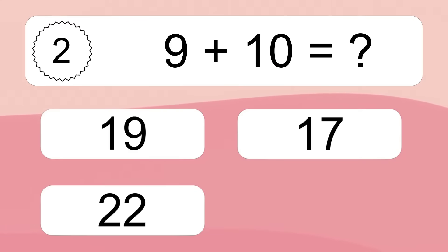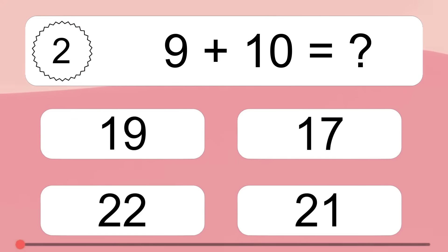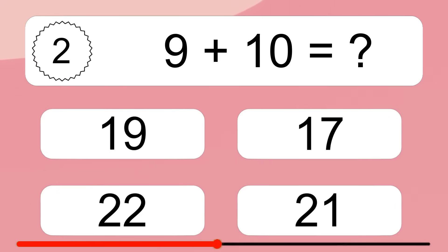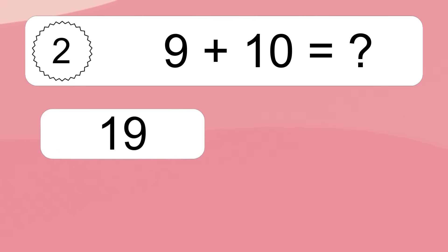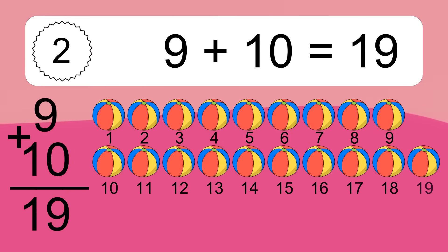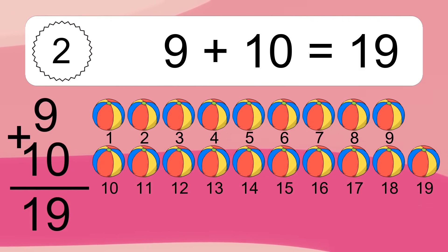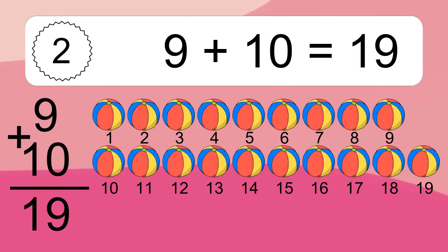9 plus 10 equals what? 9 plus 10 equals 19. Let's count it: 1, 2, 3, 4, 5, 6, 7, 8, 9, 10, 11, 12, 13, 14, 15, 16, 17, 18, 19.